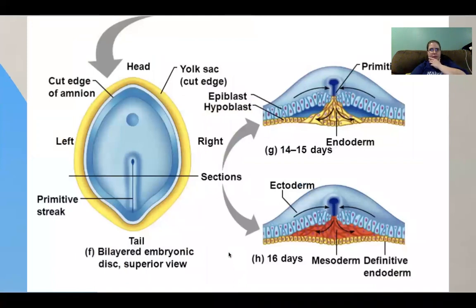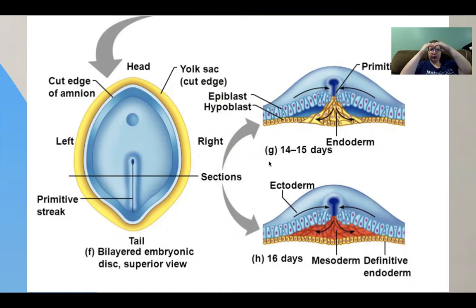Here we have a top view of the embryo and a side view showing how it's flattened out. Here is the primitive streak — that's closer to what will be the posterior, as opposed to the head — and it starts pinching inward, which will lead to the central nervous system. The top layer is the ectoderm, then the mesoderm, and then the endoderm — the primitive germ layers.